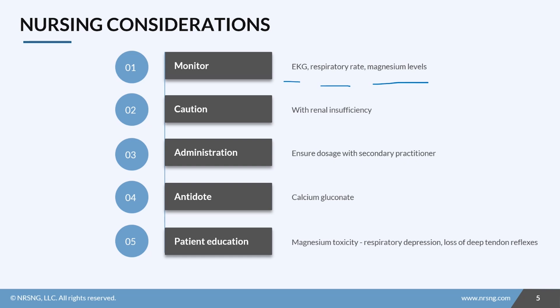Use caution in patients who have renal insufficiency. When administering magnesium sulfate, be sure that you are checking the dose with a secondary practitioner with IV doses.